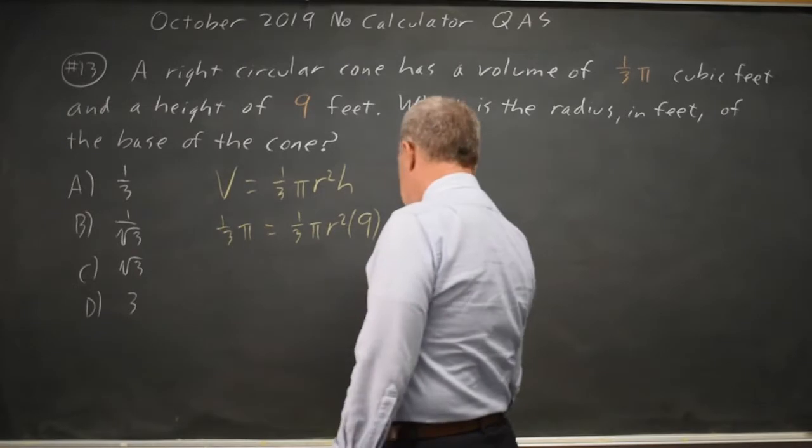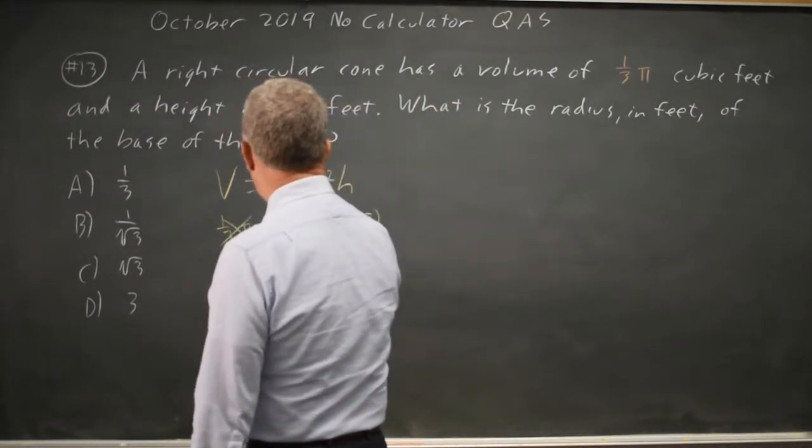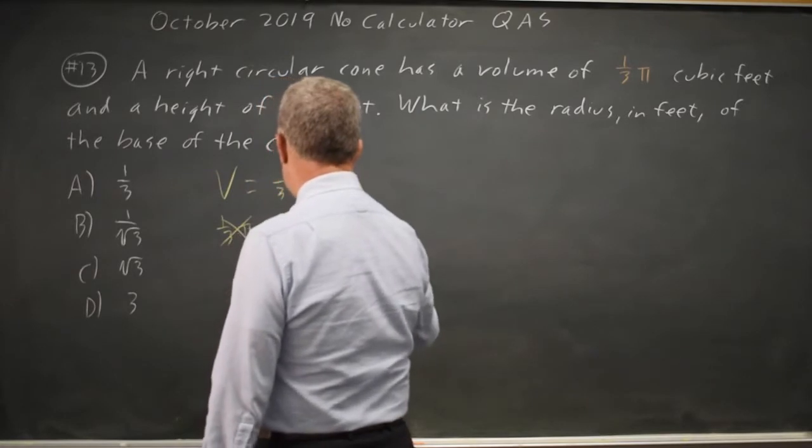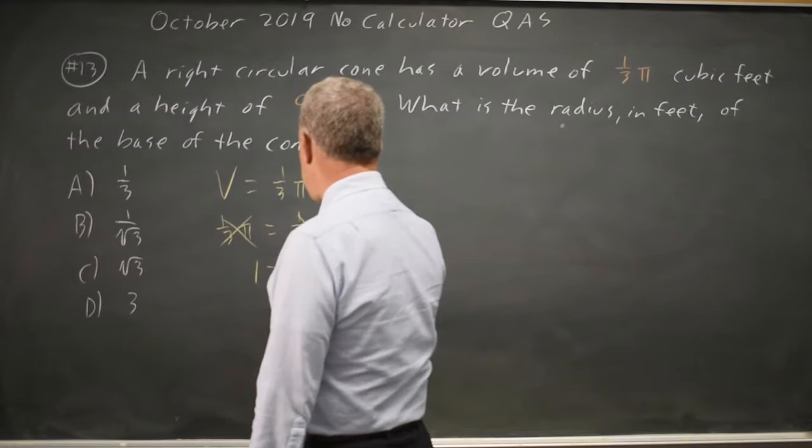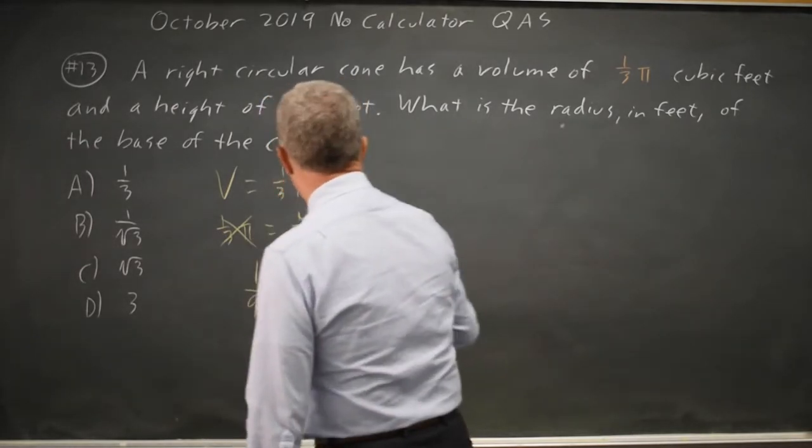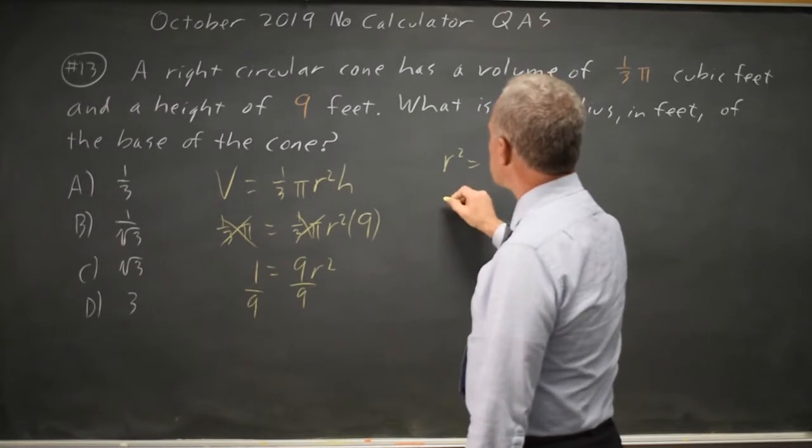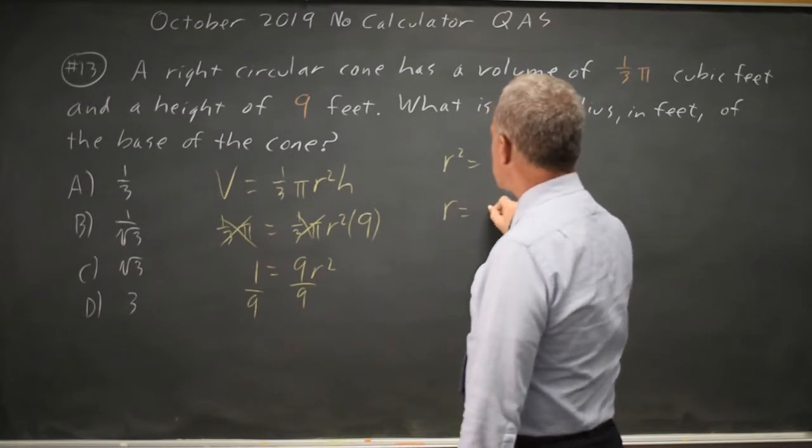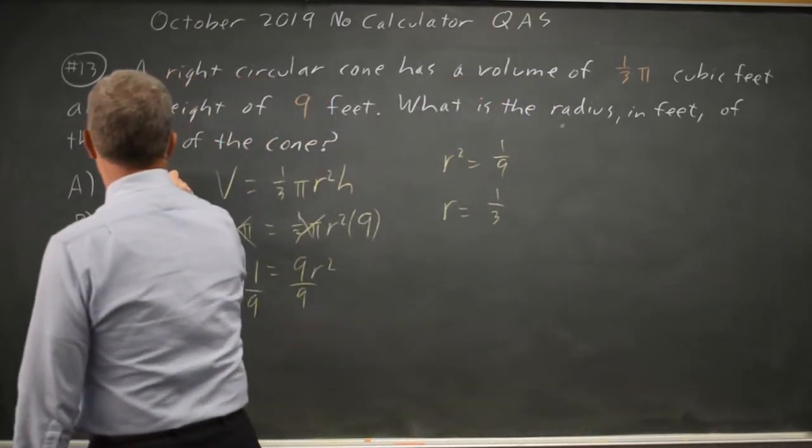Divide both sides by one-third pi, you get 1 equals 9r squared, and they're asking for the radius r. Divide both sides by 9 and you get r squared equals 1 over 9. Square root both sides: r equals one-third, which is choice A.